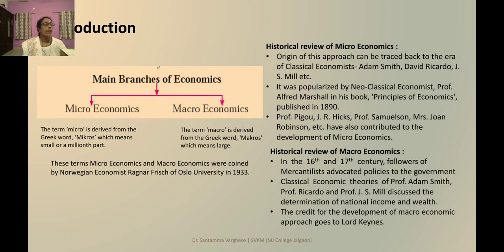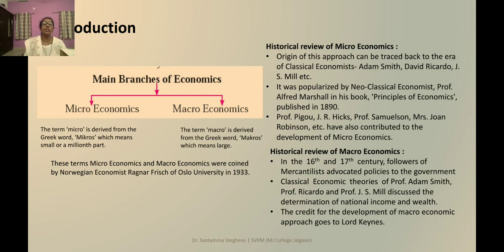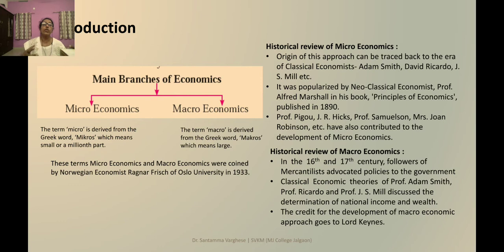The credit for the development of the macroeconomics approach goes to Keynes because he gave the theory to improve the economy from the Great Depression of the 1930s. We are all familiar with today's conditions — how disease has spread and many aspects of the economy, production and distribution, have been closed down. Similarly, in the 1930s after the First World War, there was a spread of disease, the economy collapsed and went into the Great Depression. Keynes's theory of employment brought the economy back to successful running.